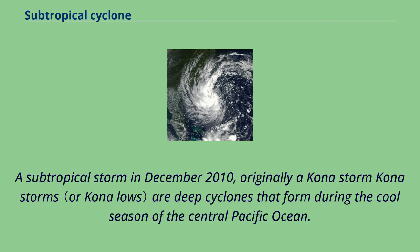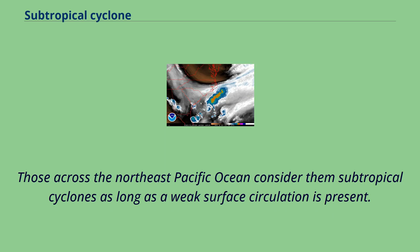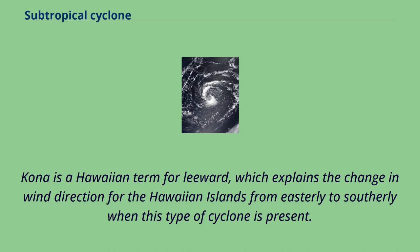A subtropical storm in December 2010, originally a Kona storm. Kona storms are deep cyclones that form during the cool season of the central Pacific Ocean. A definition change in the term during the early 1970s makes categorization of these systems more complex, as many Kona lows are extratropical cyclones complete with their own weather fronts. Those across the northeast Pacific Ocean consider them subtropical cyclones as long as a weak surface circulation is present. Kona is a Hawaiian term for leeward, which explains the change in wind direction for the Hawaiian islands from easterly to southerly when this type of cyclone is present.